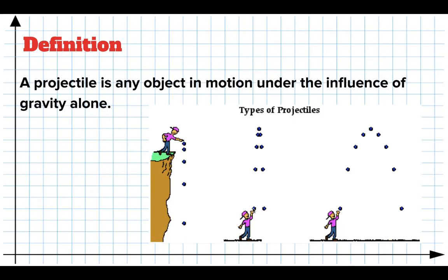If I throw a ball upwards, gravity acts on it and causes the velocity to decrease until it stops, and then it moves with a negative velocity that increases. That's also a projectile. And if I throw a ball up in the air sideways, it is still only acted on by gravity. So a projectile is any object that's moving under the influence of gravity alone.